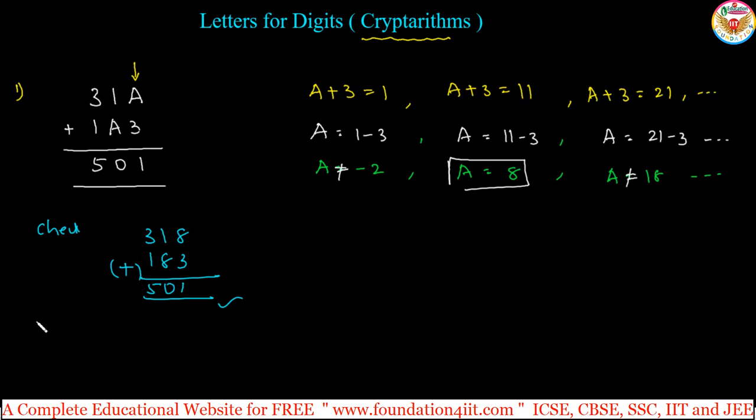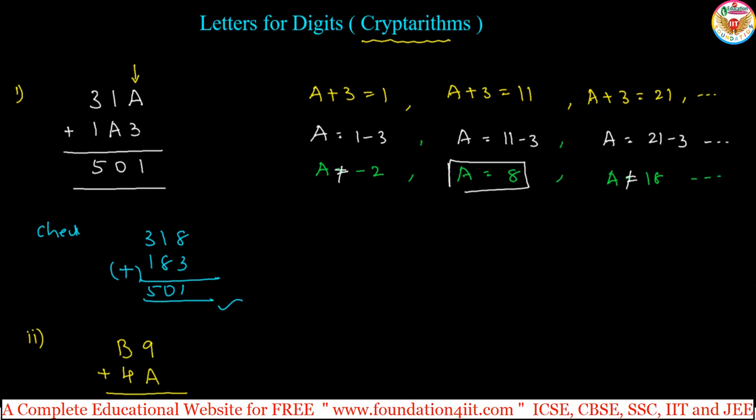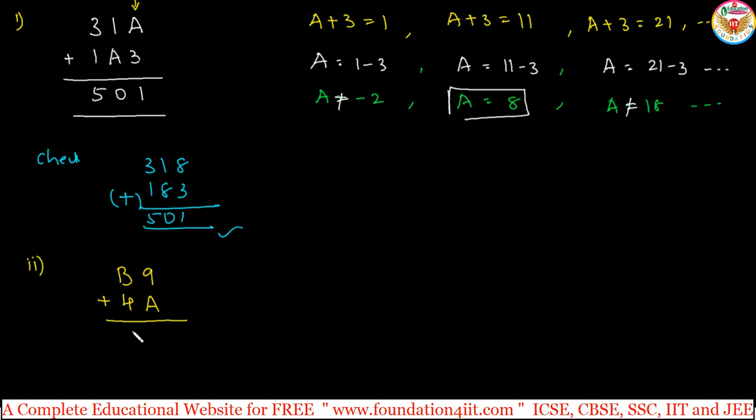Let us take two numbers. For example, B9 plus 4A, the value is 65. Same pattern if you observe, clearly 9 plus A, this units place. 9 plus A, it must be 5, or 9 plus A it must be 15, or 9 plus A it must be 25 and so on, right?